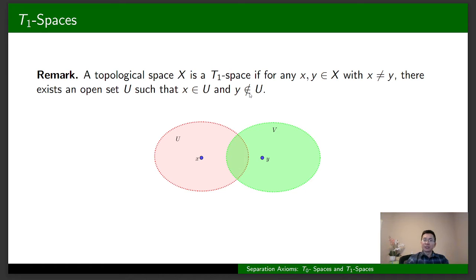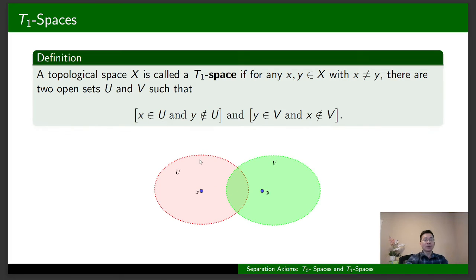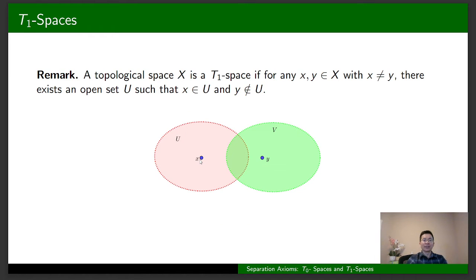So how is this equivalent to the previous definition? First, we apply this property for x and y, so there is an open set U containing x and U doesn't contain y. Because of the equal role of x and y, we can apply this property for y and x as well, so there is an open set V containing y and V doesn't contain x. Therefore, the property of a T1 space is satisfied, and X is a T1 space.